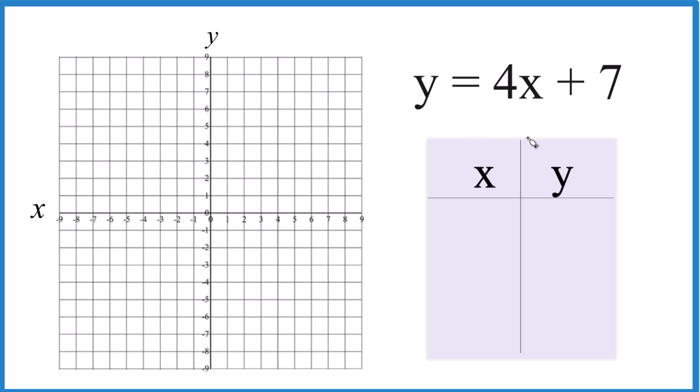So we're going to put values in for x, figure out what we get, and that'll give us y, and we'll graph it. Let's start out with, we could say 0, because 4 times 0, that's 0, plus 7, that gives us 7.